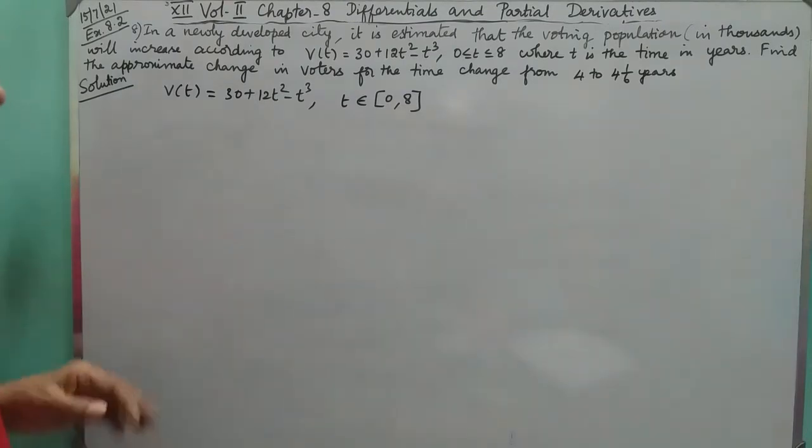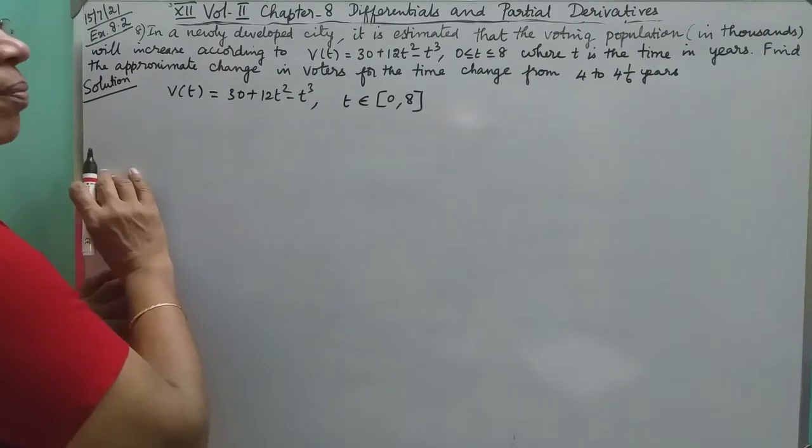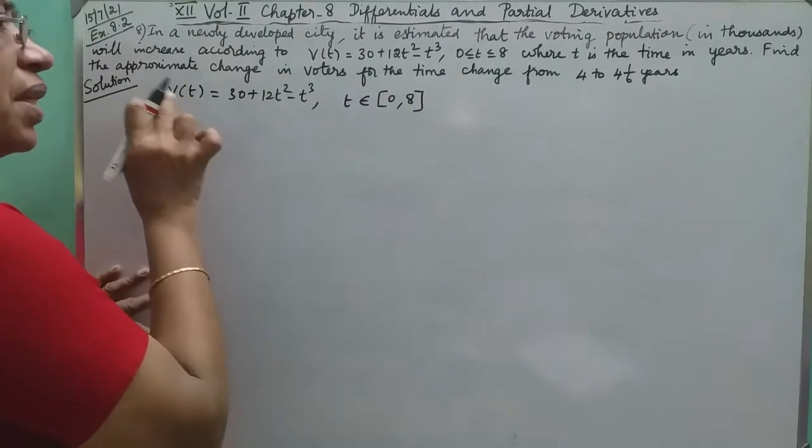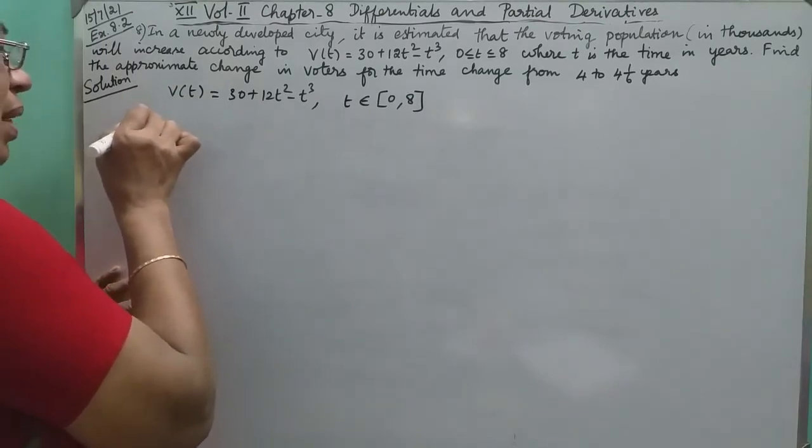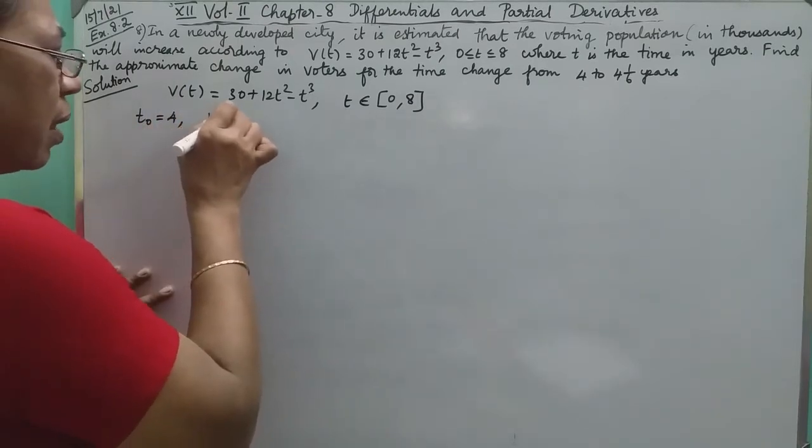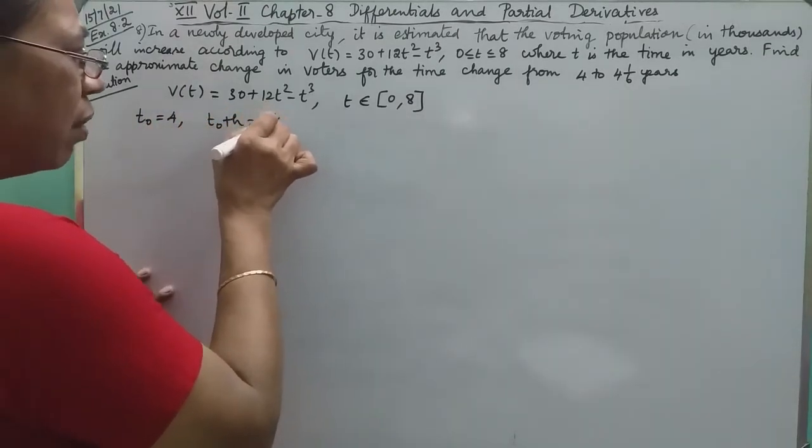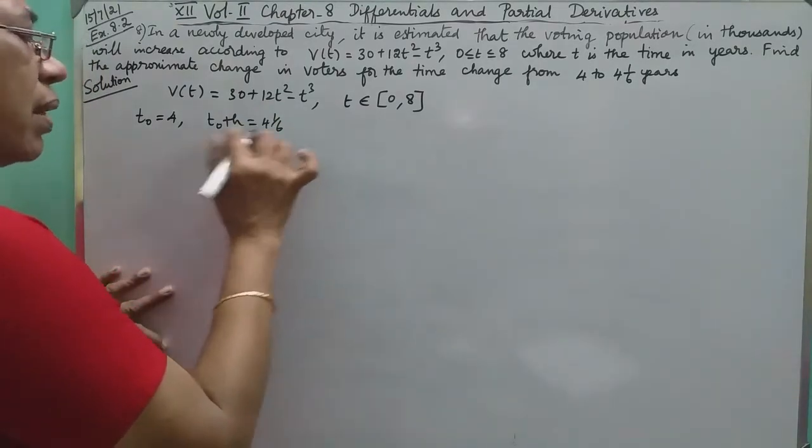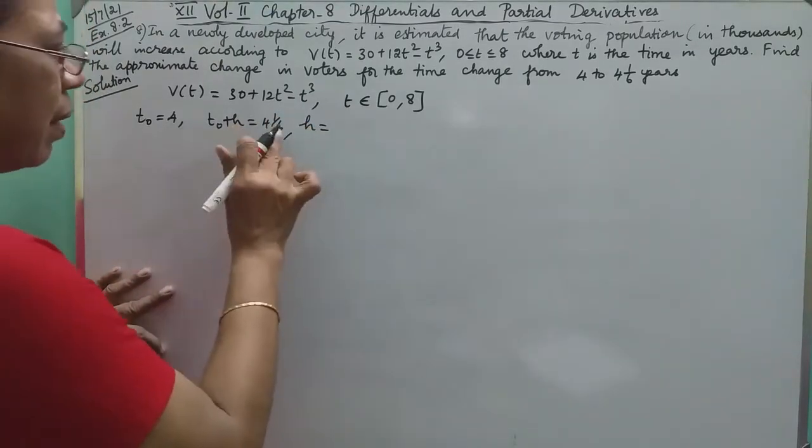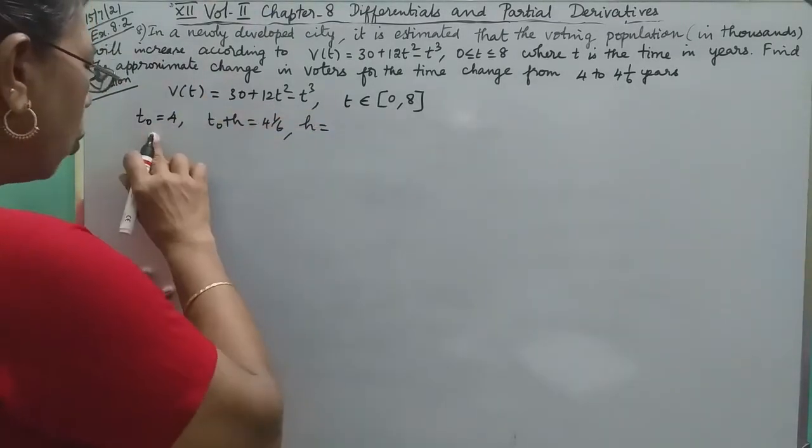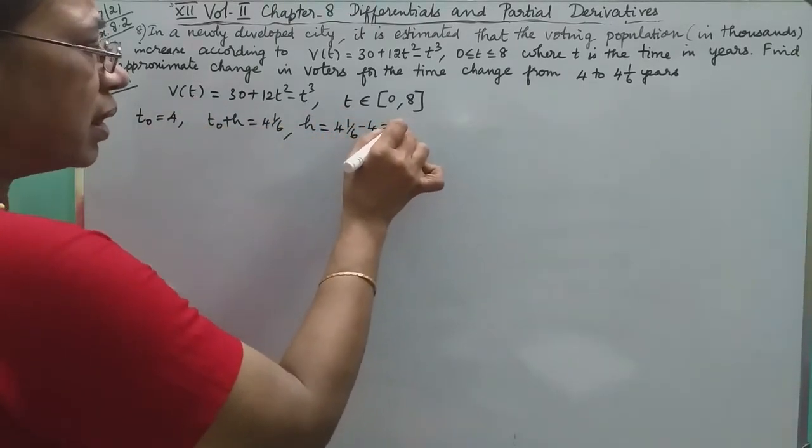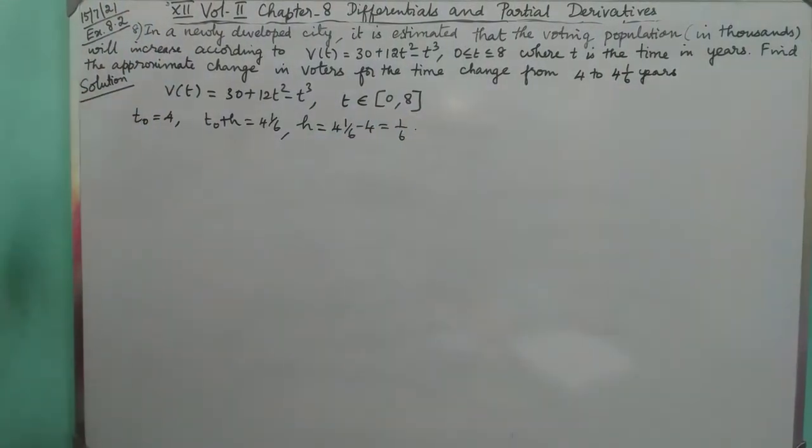When asking for approximate value, we take the derivative directly. If we fix t₀ at 4, the function is V in terms of t. Instead of x₀, we take t₀. So t₀ is 4 fixed. Then t₀ + h is 4 and 1/6. So the increase h is obtained by subtracting: new minus old. 4 and 1/6 minus 4 is nothing but 1/6.